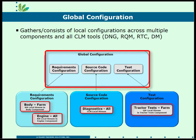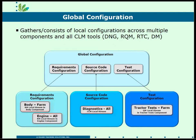The global configuration is absolutely necessary if you want to link requirements to test configurations. If you did just a single DNG configuration of a project, it doesn't know what versions of tests it should talk to. So you'd first do those local configurations to separate out different versions of just the requirements, then you create global configuration to link them all together.